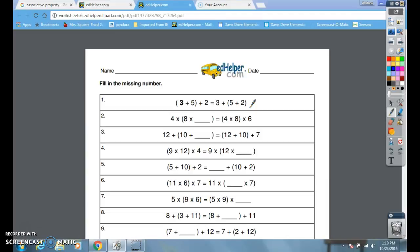Associative property means that you can add or multiply and it doesn't matter how the numbers are grouped. Commutative property was how the numbers are in a different order, but with associative property the numbers can be grouped differently.